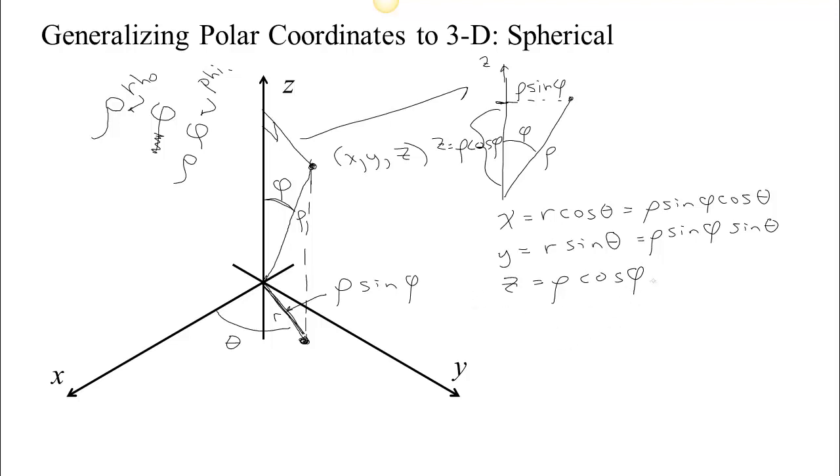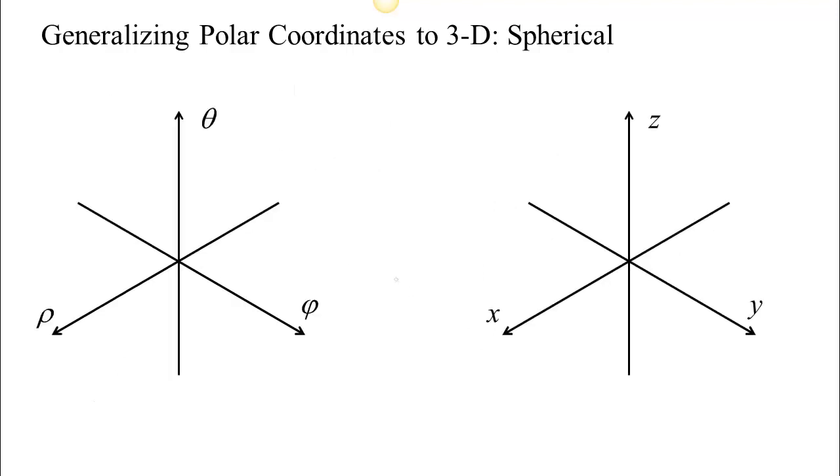So you need to understand where these equations are coming from. These again make a transformation. A transformation from one three dimensional space where the names of the variables are rho, phi, and theta. To another three dimensional space where the names of the variables are x, y, and z. Let's look at some of the implications of this transformation. So x is rho sine phi cos theta. Y is rho sine phi sin theta. And z is rho cos phi. Make sure you can draw the picture and obtain these equations that transform us.